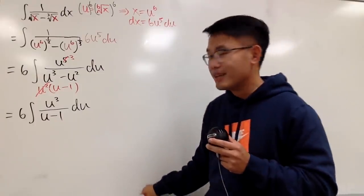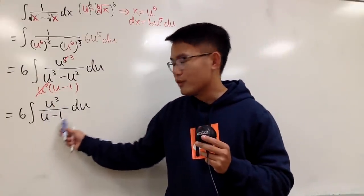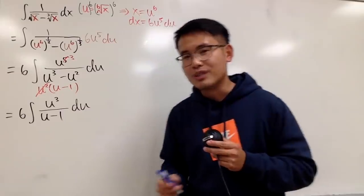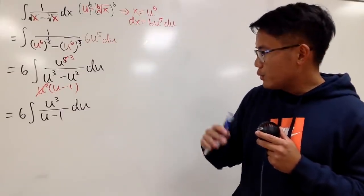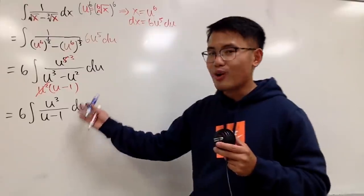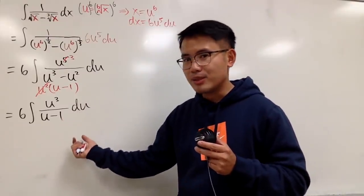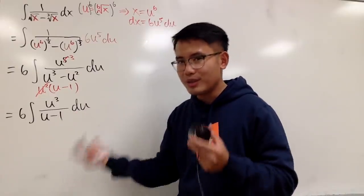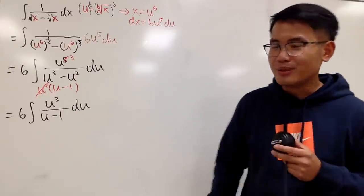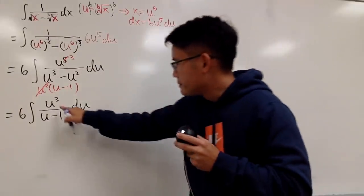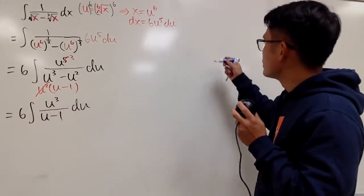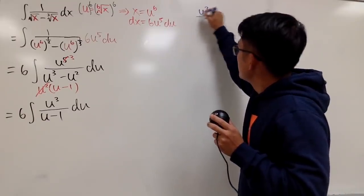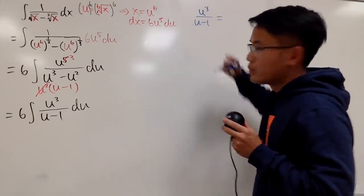Now notice this rational function — on top the degree is 3, on the bottom the degree is 1. So we should do some long division. If you don't want to do long division, you can also do another substitution, like letting w equal to u minus 1, and then continuing from there. I'll leave that to you. I'm going to do the long division. So right here, I'll work out u^3 over (u minus 1).